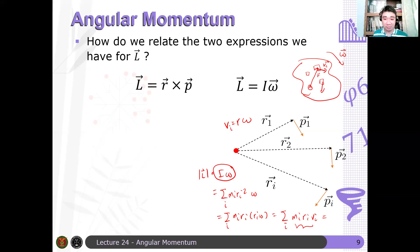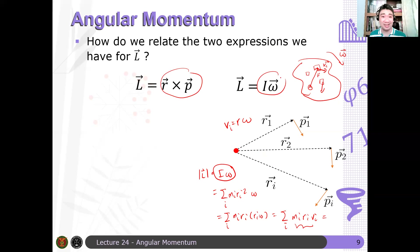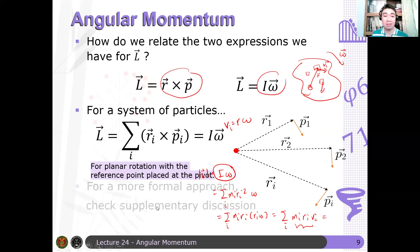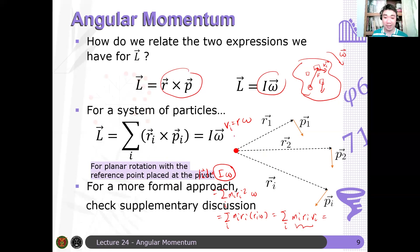So that's basically a heuristic argument to show that these two definitions are indeed equivalent. For a system of particles, this summation can be converted into Iω. A more formal way to define this is in the supplementary discussion that I will be uploading.